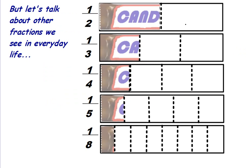But let's talk about other fractions we'll see in everyday life. This would be half of a candy bar. A third of a candy bar would be this much, then 1 fourth, 1 fifth, or even 1 eighth of a candy bar.